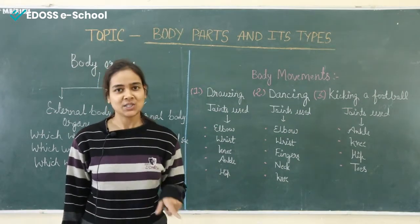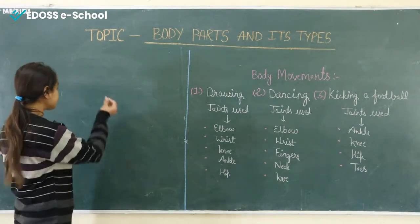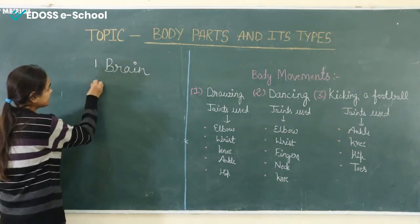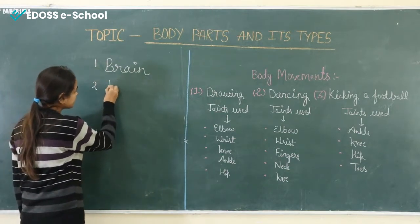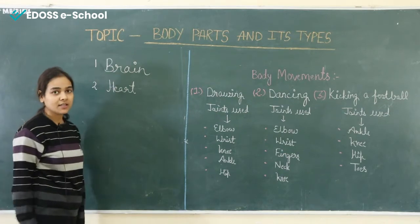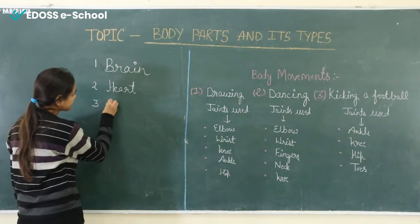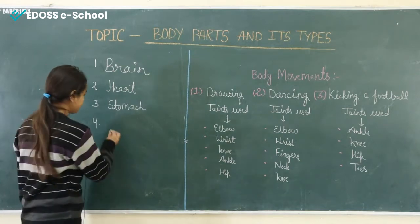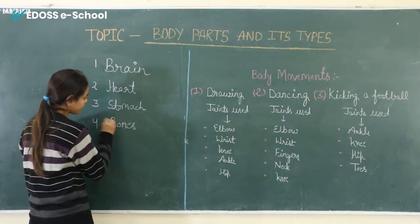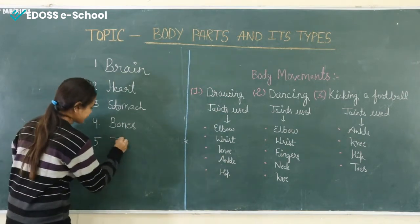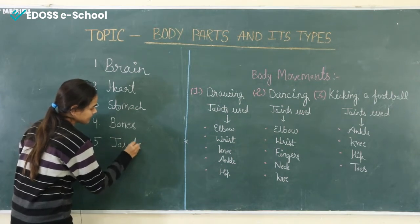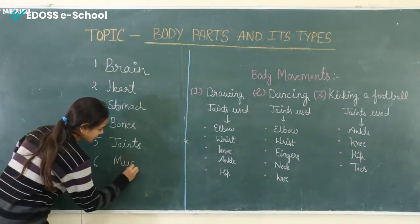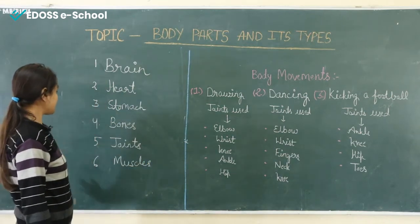So let's see what are the main internal body organs. First, brain. Second, heart. Third, stomach. Fourth, bones. Fifth, joints. Sixth, muscles. These are our main internal body parts.